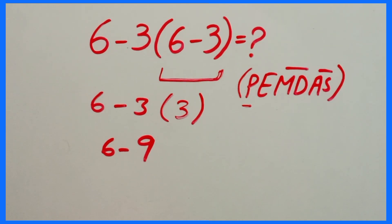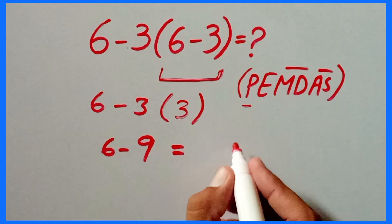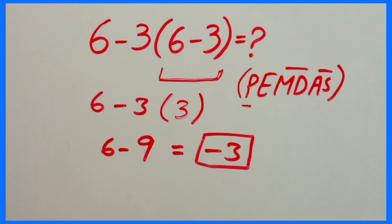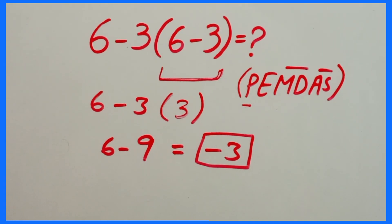So 6 minus 9 is equal to negative 3. Guys, this is the final answer of this expression. I hope you all understand. If you have any questions, leave a comment and I will reply. Thanks a lot.